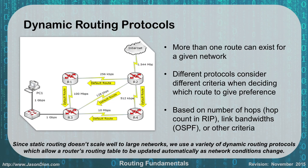With dynamic routes, more than one route can exist for a given network. Different protocols consider different criteria — known as metrics — to decide which route is given preference. In the diagram, PC1 can reach the internet in many different ways: router 3 to router 2 and out; or router 3, router 4, router 2 and out; or router 3, router 1, router 2 and out. So there are three different paths to choose from.